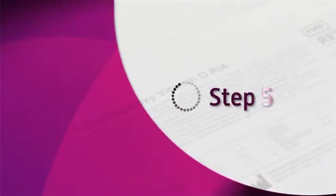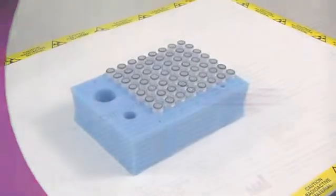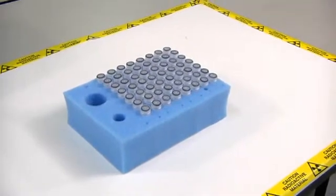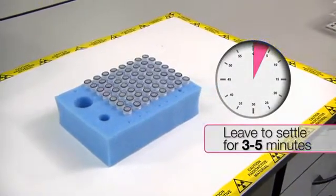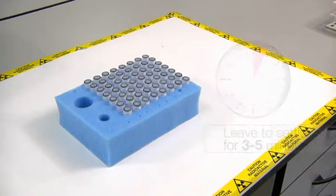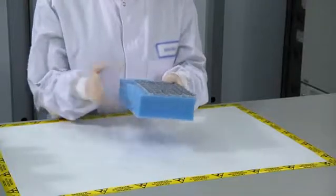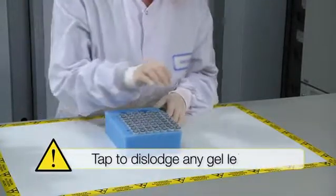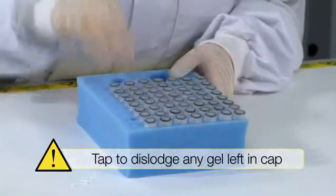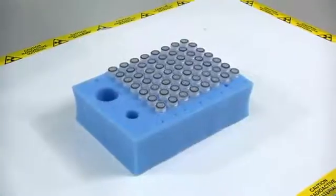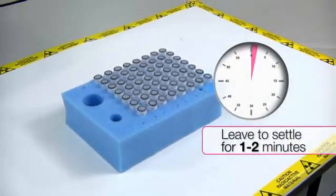Step 5: Stand immunocapsules upright in foam rack for 3 to 5 minutes to allow gel to settle. Tap to dislodge any gel adhering to the screw caps. Allow gel to settle for a further 1 to 2 minutes.